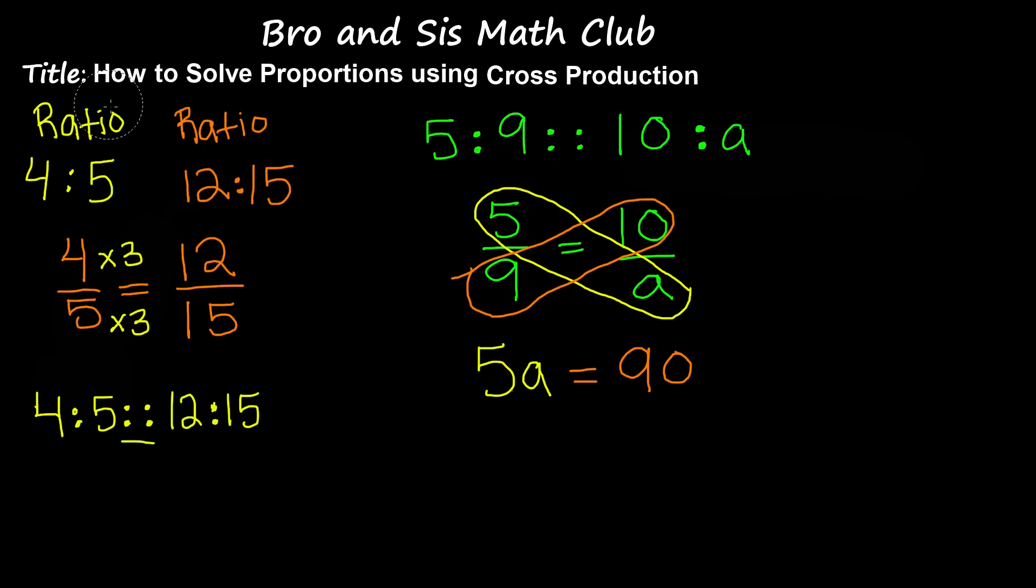Now we have to divide by 5. The reason we do that is because we're multiplying by 5, and we have to get rid of the 5 since we're solving for the variable. So we divide by 5 on both sides. When you divide 5A by 5, the 5s cancel each other out, and we're left with A equals 90 divided by 5, which gives us 18. So 18 is our missing number.